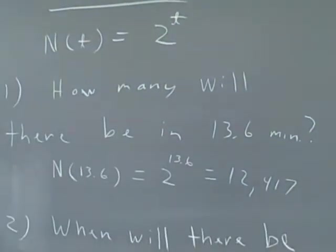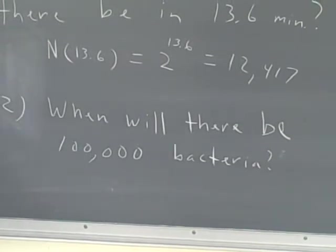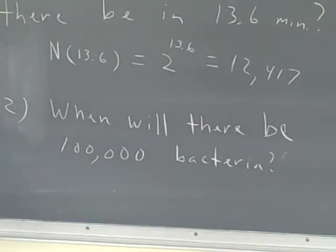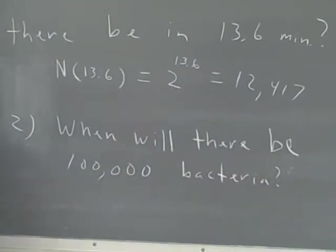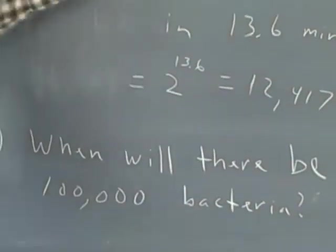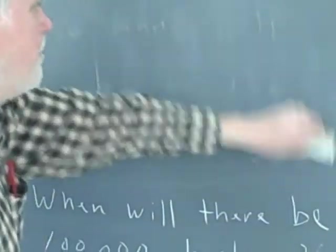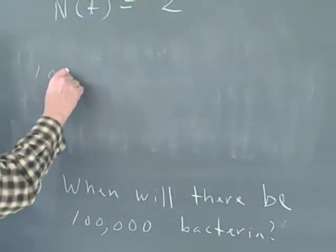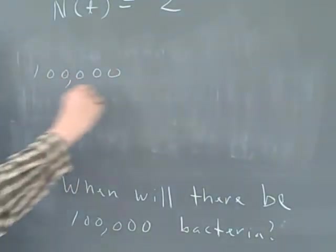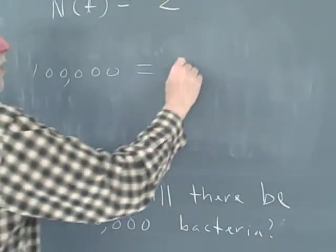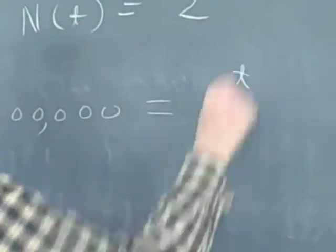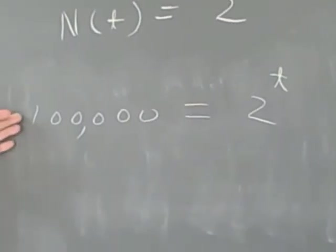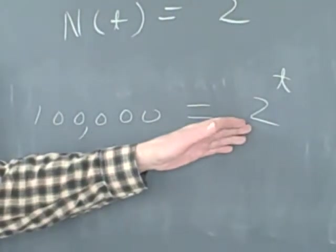The next question you might want to know is when will there be 100,000 bacteria? In other words, when will this culture start with 1 and grow to 100,000? Sort of the opposite question. So the number I want is 100,000, and this equals 2 to the t, and we want to know what time will I have 100,000 of these little critters. How do we solve this? This is an exponential equation.